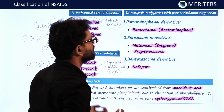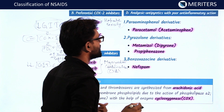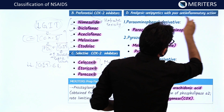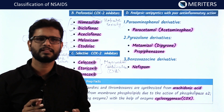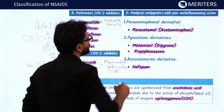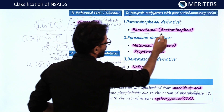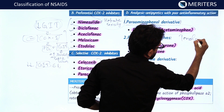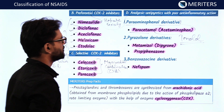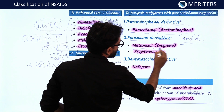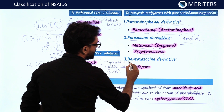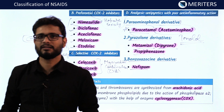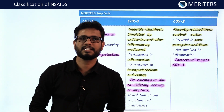The fourth category is analgesic antipyretics with poor anti-inflammatory action. While NSAIDs normally have all three effects — analgesic, antipyretic, and anti-inflammatory — certain drugs lack significant anti-inflammatory action. The most important drug here is paracetamol, also known as acetaminophen or by the brand name Tylenol. We also have pyrazolone derivatives such as metamizole and dipyrone, and benzoxazine derivative nefopam.